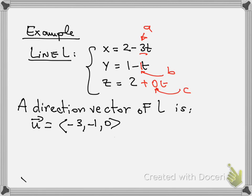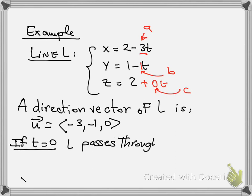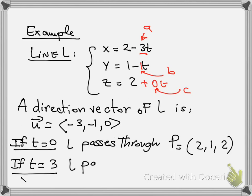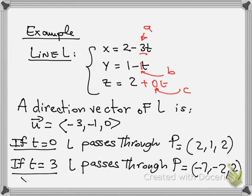This line passes through the point P = (2, 1, 2) when t = 0. If t = 3, then x = 2 − 9 = −7, y = 1 − 3 = −2, and z = 2. Each time you replace t by a real number, you get a point which belongs to the line.